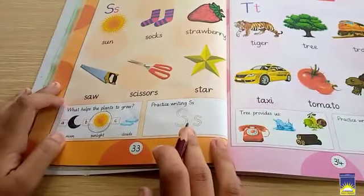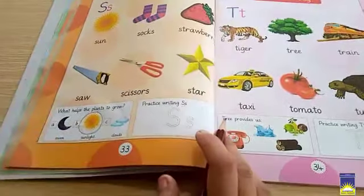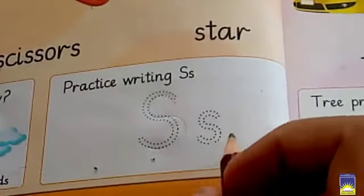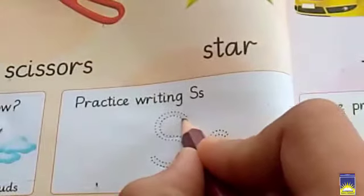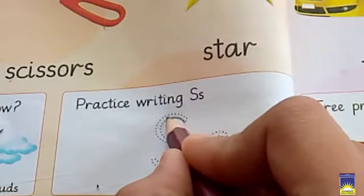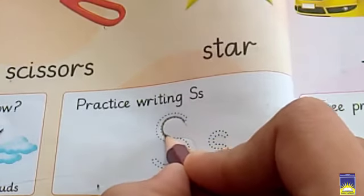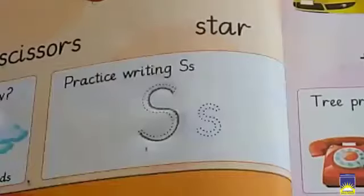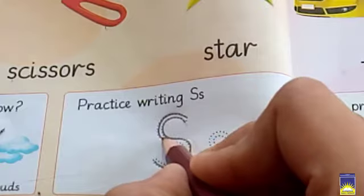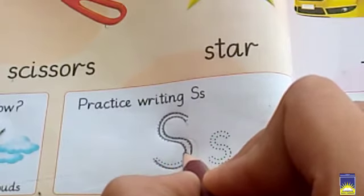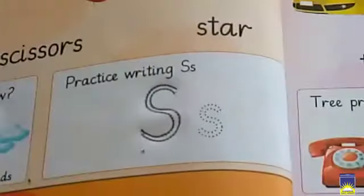In the next column, we will see how to write the letter S. First we write capital S. Start at the top, go down, make a small round, to the bottom. Then again start at the top, go round to the bottom.